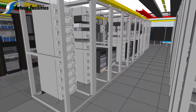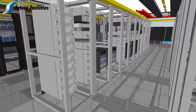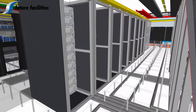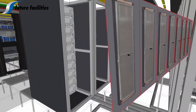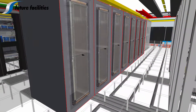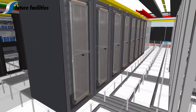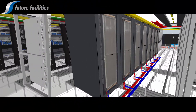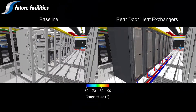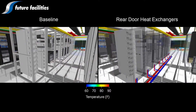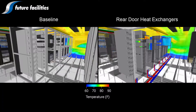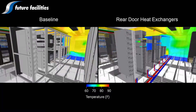Here we see a row of high density racks within a contained cold aisle. The racks have open rear doors and are loaded with high density IT equipment. Using simulation we can visualize the exhaust temperature profile from the cabinets and directly compare differences in cooling performance with and without your solution.